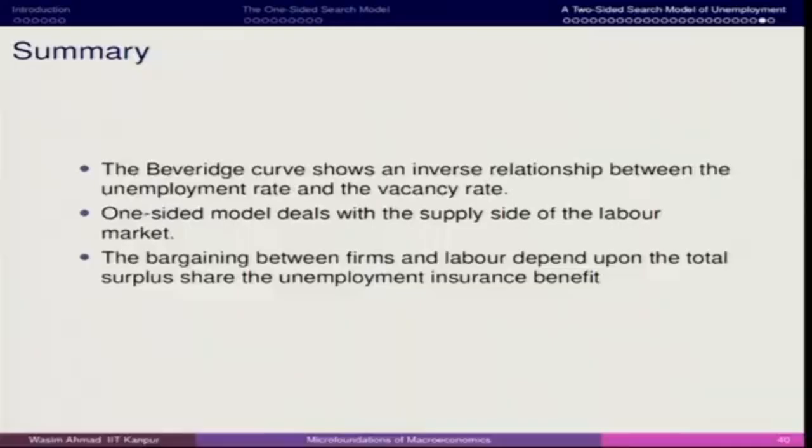As a summary, we discussed the Beveridge curve, mentioned the one-sided model and two-sided model. The underlying idea is that with small micro foundations of labour and consumer behaviour, we are able to derive the macro picture of unemployment and see how labour search matters and how it impacts labour participation in the market. We will have further discussion on different schools of thought and rational expectations. Thank you so much for your attention.